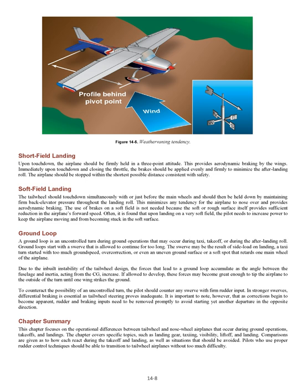Chapter Summary: this chapter focuses on the operational differences between tailwheel and nosewheel airplanes that occur during ground operations, takeoffs, and landings. The chapter covers specific topics such as landing gear, taxiing, visibility, liftoff, and landing, giving comparisons as to how each type reacts during the takeoff and landing, as well as situations that should be avoided. Pilots who use proper rudder control techniques should be able to transition to tailwheel airplanes without too much difficulty.